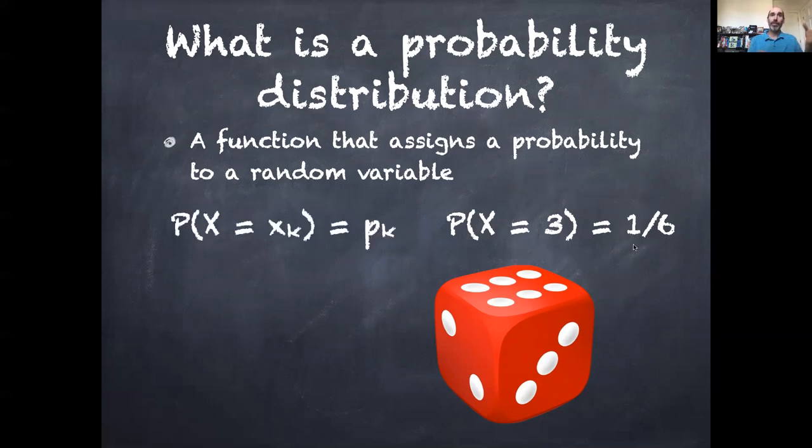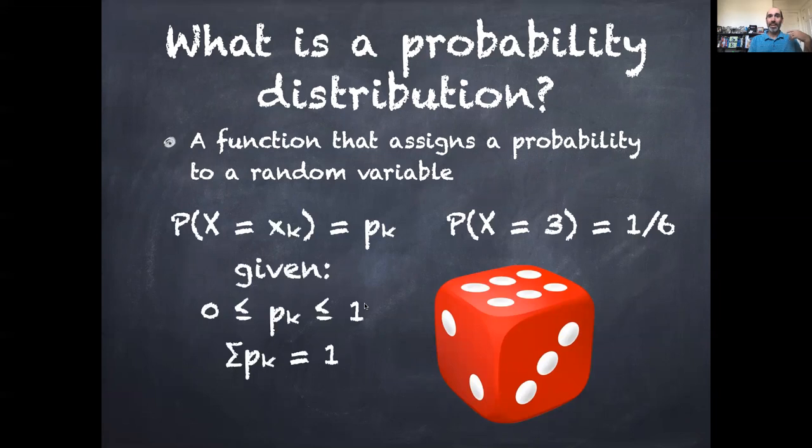More generally, we can write the probability that a random variable big X takes on a specific value little x_k is assigned with probability p_k with some important constraints. Those individual probabilities, all k of them, have to be between 0 and 1 - you can't have negative probabilities, you can't have probabilities bigger than 100% - and furthermore those probabilities have to sum up to 1. So if I have a six-sided dice and they each had a 10% chance of happening, then there's 40% missing - that doesn't make sense because it's going to come up one of these six options.